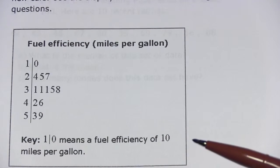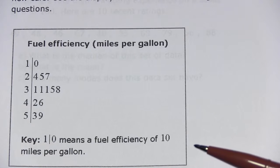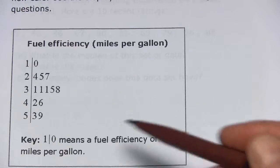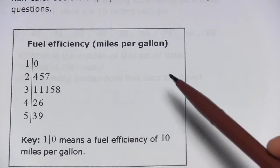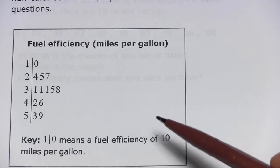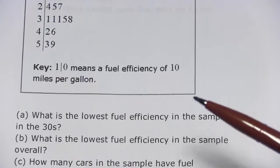So it's kind of a compact way to list out a set of data points. In this case, these are representing fuel efficiency of different vehicles, and we've got some questions to answer about these.